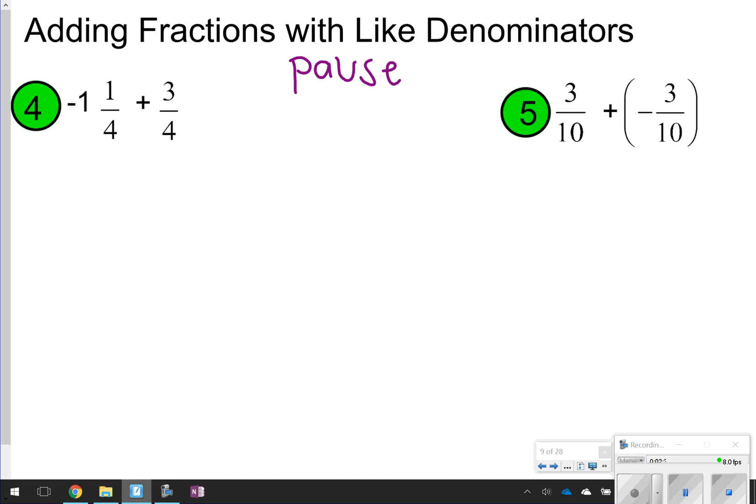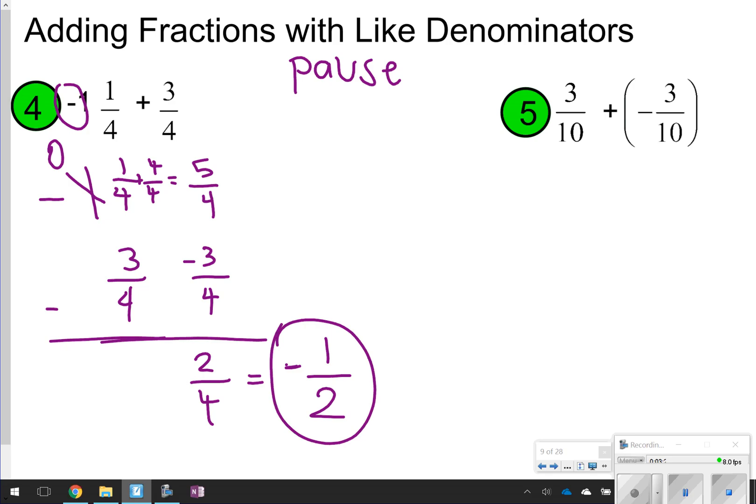Number four, it says we have different signs. We've got to do different signs, subtract. When we are subtracting, notice I'm taking the larger number and subtracting the smaller one. I cannot do one-fourth minus three-fourths, so I'm going to have to borrow here. This is how we borrow fractions. The one becomes a zero, and then I can add a four-fourths over here to make it easier to subtract. One-fourth plus four-fourths is five-fourths, so I'm essentially subtracting five-fourths and three-fourths. That's going to give me two-fourths, which simplifies to one-half. Now I just have to make sure I need to keep the sign of the larger value, so my answer should be negative one-half for number four.